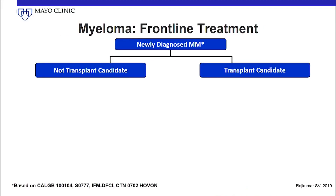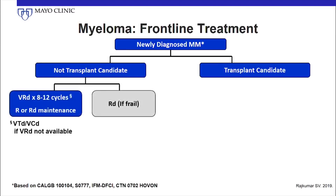As far as myeloma frontline treatment goes, most of us would first separate patients into transplant candidates and non-transplant candidates. If bortezomib len-dex was available, then using bortezomib len-dex for one year followed by lenalidomide maintenance would be the standard. VTD or VCD can be used instead of VRD if lenalidomide is not approved frontline. There is an abstract at this meeting looking at whether we can just do one year of VRD and then do lenalidomide alone rather than len-dex, sparing some side effects. Preliminary data suggests that you don't need the steroids.